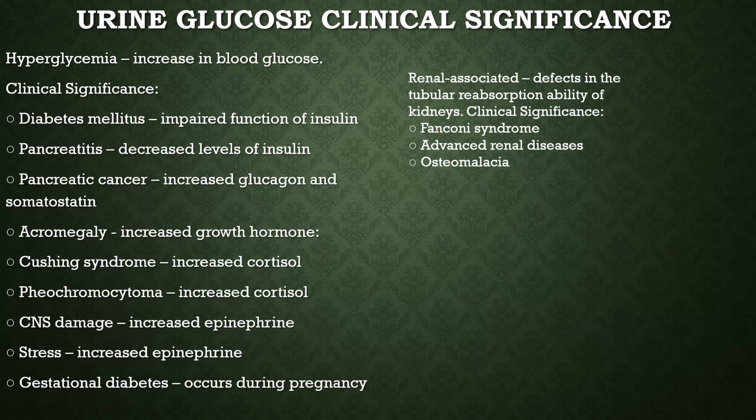The principle for bilirubin is the diazo reaction. The pad is impregnated with diazonium salt, which reacts with conjugated bilirubin (B2) in acid medium, producing a pink or purple color. The diazonium salts used are dichloroaniline (most common) or dichlorobenzene diazonium tetrafluoroborate. Color is reported as negative, trace, 1+, 2+, 3+, and 4+. Interferences: false positive from indicans, phenazopyridine, and metabolites of Lodine; false negative from sunlight exposure, ascorbic acid, and high concentration of nitrite.